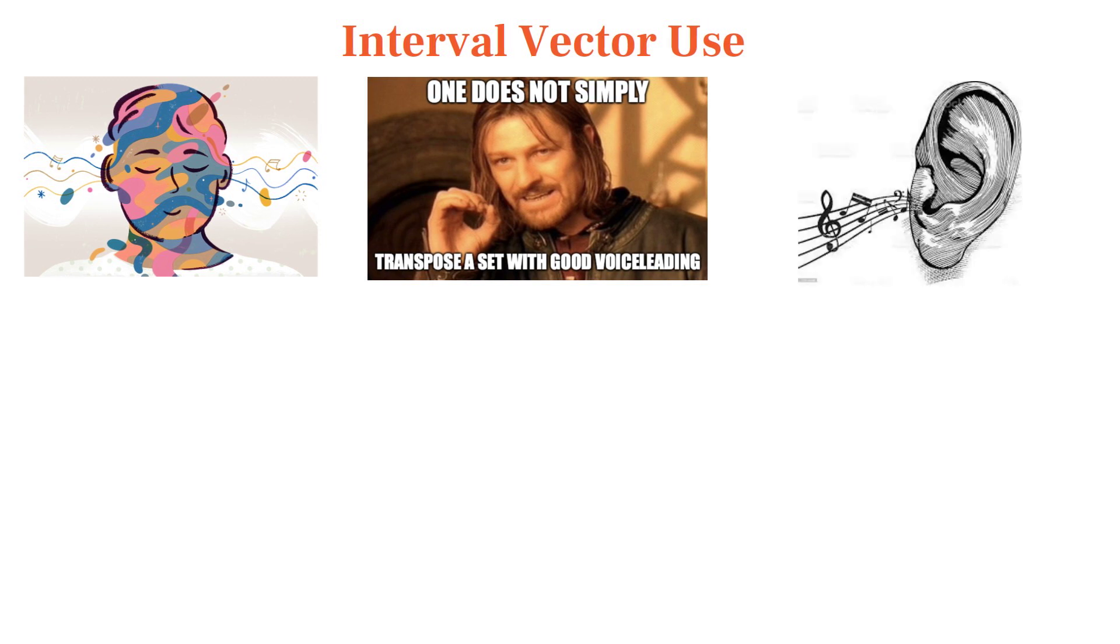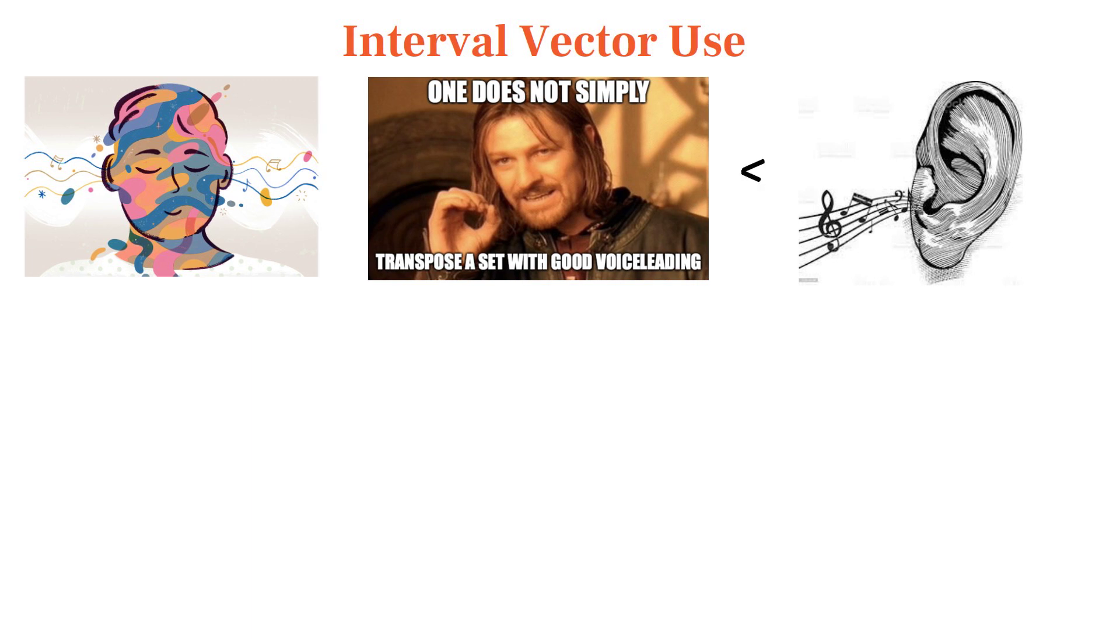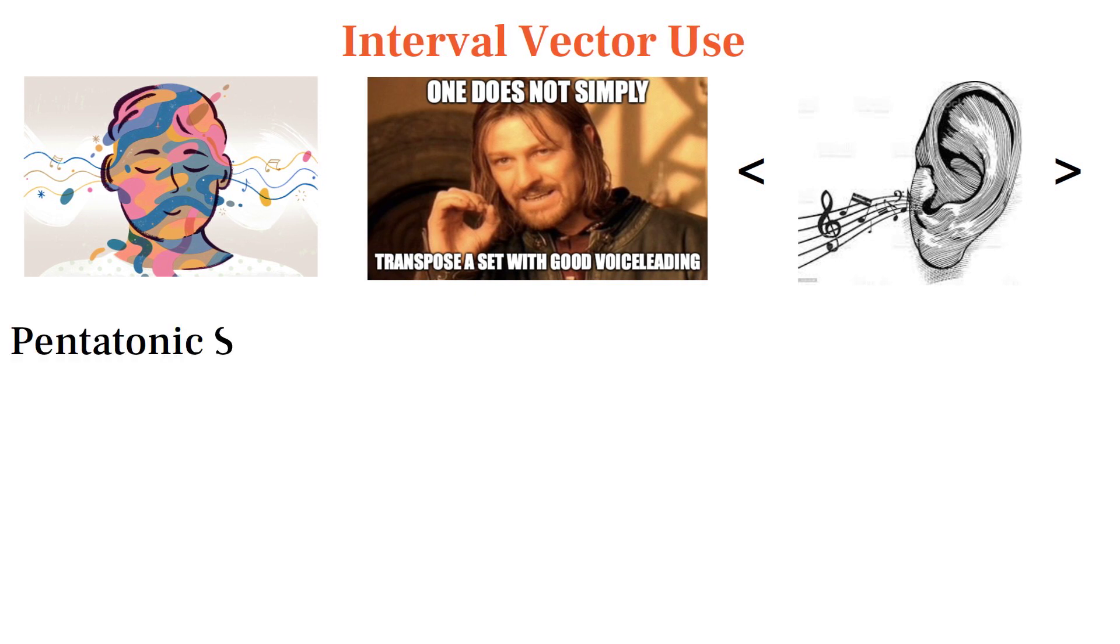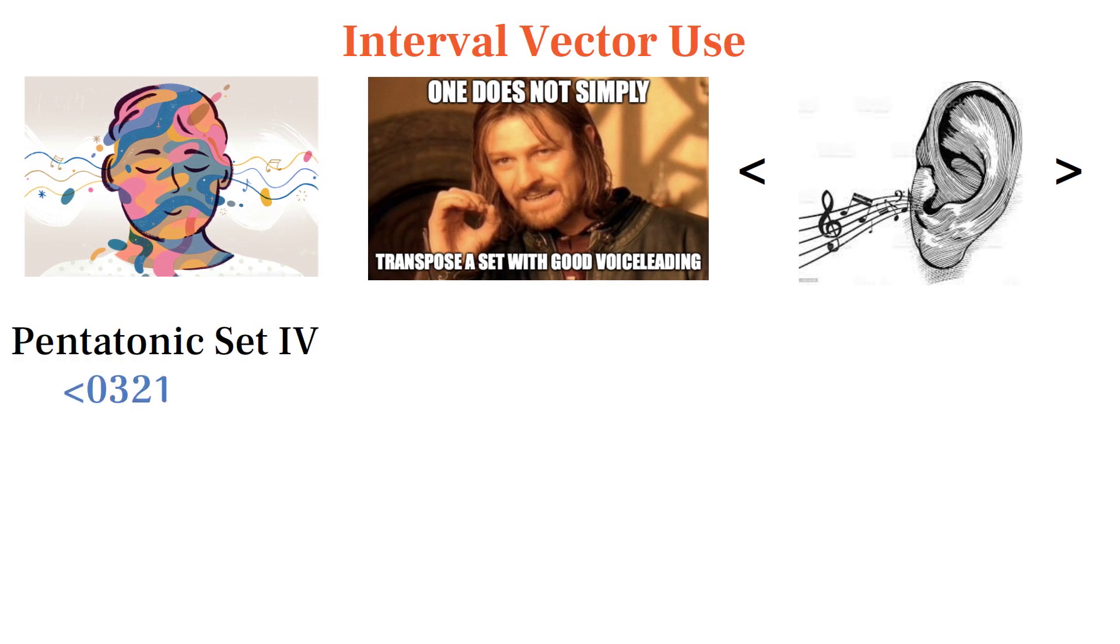Much of the effect a set has on the ear comes from the intervals contained in it, and looking at the interval vector allows us to absorb this information quickly. Just by looking at the pentatonic set's interval vector, we see that it contains many consonant intervals like fourths, and contains none of the most dissonant intervals of a half step or tritone.